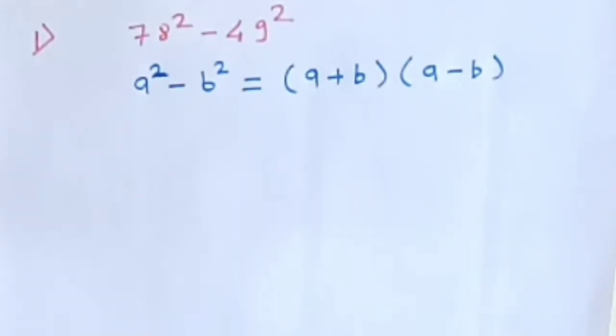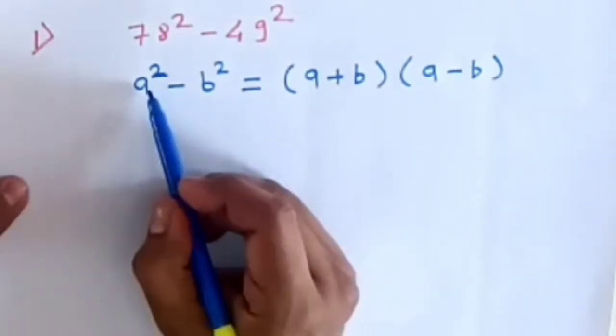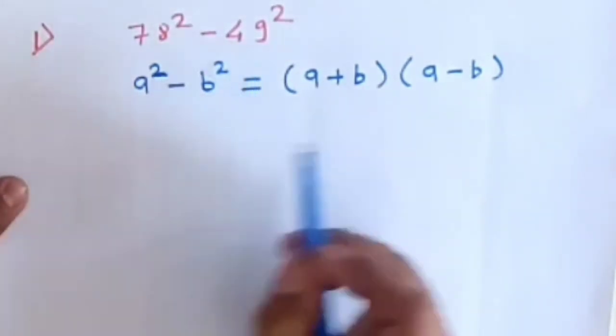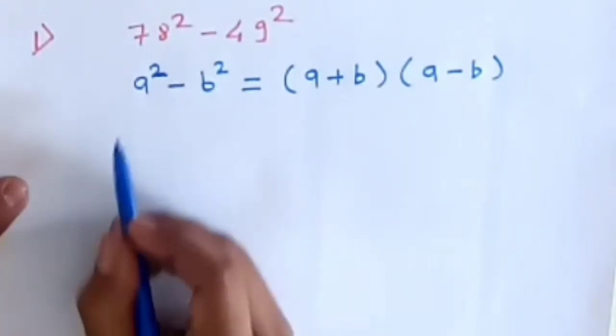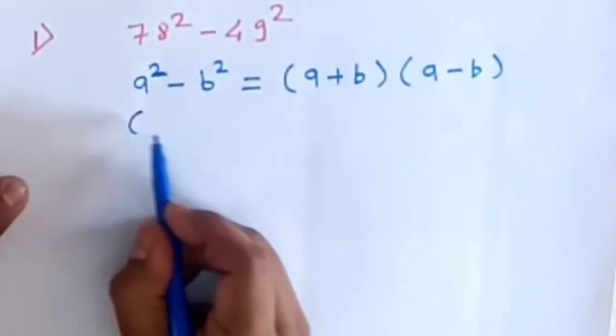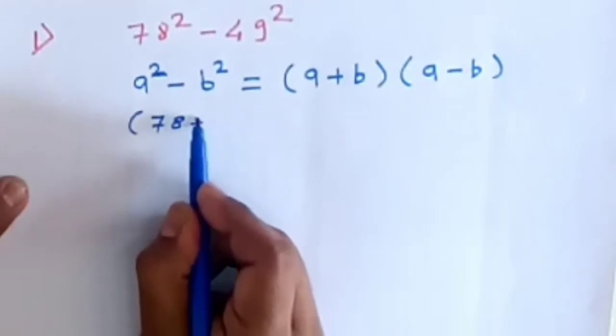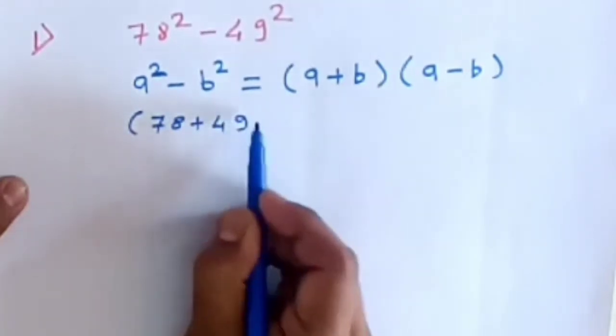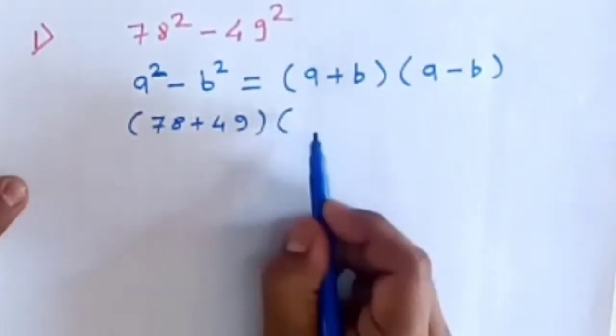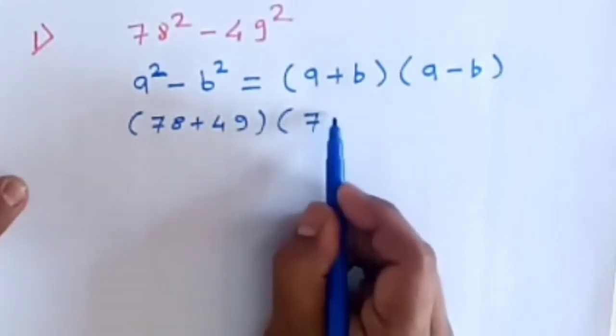Now comparing a² - b² with 78² - 49², we get a = 78 and b = 49. Then put 78 + 49 in the first bracket and 78 - 49 in the second bracket.